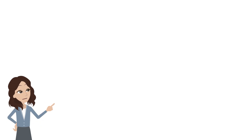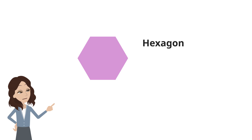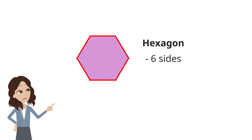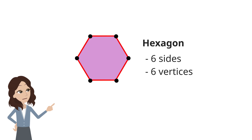Now let's look at this polygon. It is called a hexagon. How many sides and vertices does it have? Pause and discuss with your friends. It is made up of six straight line segments, so we say that it has six sides. It also has six points where two line segments meet, so it has six vertices. So hexagons have six sides and six vertices.